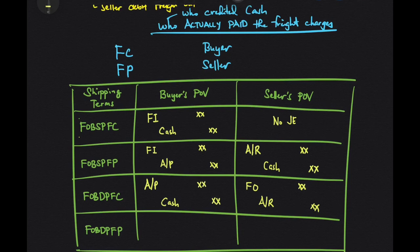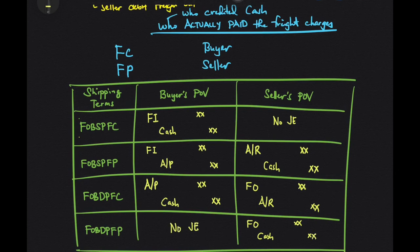Finally, FOB destination point freight prepaid. FOB destination point means the seller debits freight out, and freight prepaid tells you the seller actually paid the freight charges, so the seller credits cash. In this case, there is no entry under the buyer's books — no journal entry. This completes the discussion on the shipping terms.